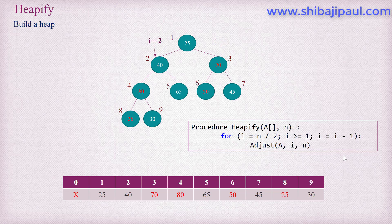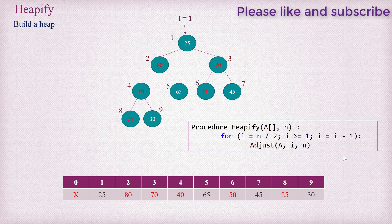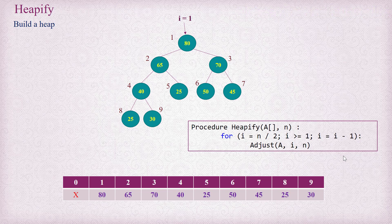We reduce i by 1 again and now i equals 2. We see that a heap is maintained at index 4 and 5, the left and right children of index 2 respectively. So we call adjust for index 2, and it restores the max heap at index 2. Finally, we reduce i to index 1, and since we have already adjusted a max heap at index 2 and 3, calling adjust for index 1 makes the whole tree rooted at index 1 a max heap. This is how heapify works.